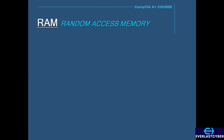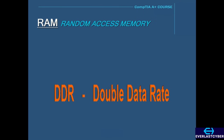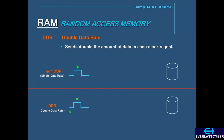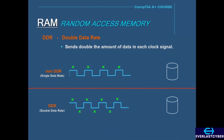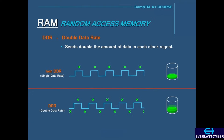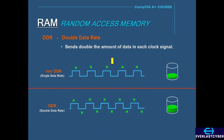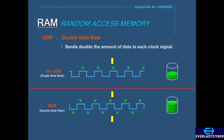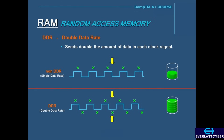As technology increased and processor and bus speeds got faster, a new RAM technology was developed to keep up with the faster speeds of computers. This newer technology was called DDR, which stands for Double Data Rate. DDR sends double the amount of data in each clock signal when compared to non-DDR RAM. Non-DDR, or Single Data Rate RAM, uses only the rising edge of the signal to transfer data. But DDR uses both the rising and falling edges of the clock signal to send data, and this makes DDR twice as fast.